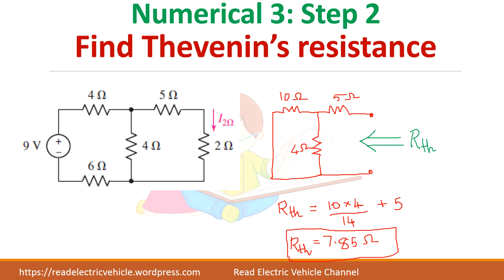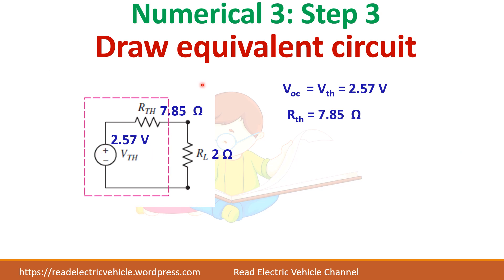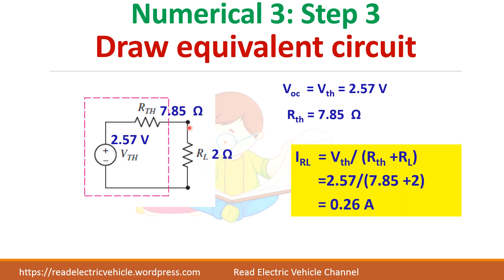Draw the equivalent circuit and write the load resistance value given in the problem. What is the current through this load? It is Vth divided by total resistance, which gives 0.26 amps. So this is the current through the load.